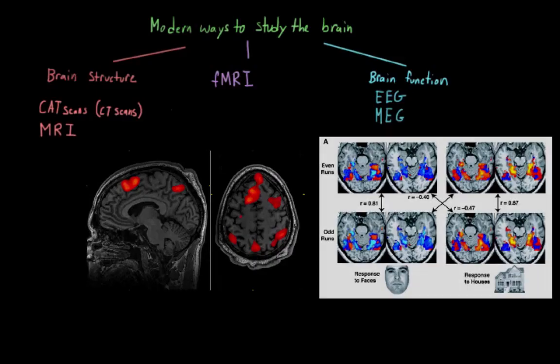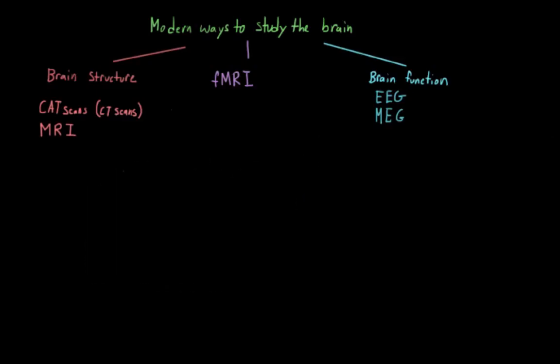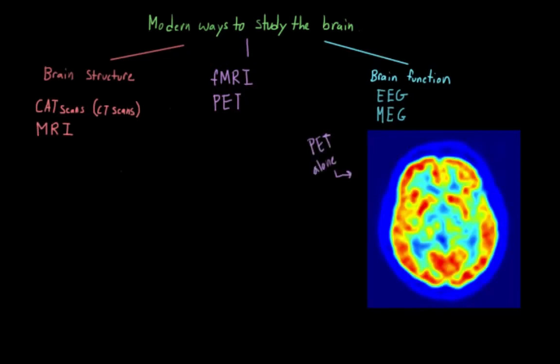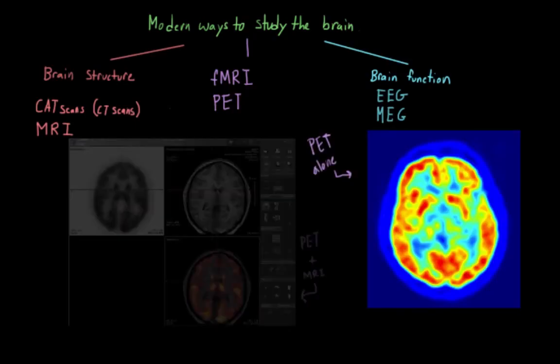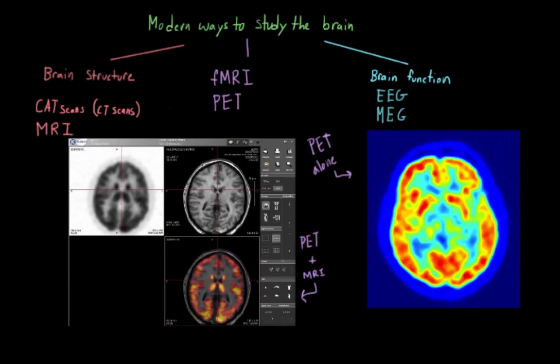The next type of methodology that is both structural and functional is positron emission tomography, or PET scans. And while on their own they can't really give us a super detailed structural image of the brain, we can actually combine them with the structural technology that we talked about earlier, like CAT scans and MRIs. And to do this technique, a kind of radioactive glucose is injected into a person. And since active cells naturally use more glucose, because they're using up the most energy and need to replenish it, we can directly see what areas of the brain are more active at a given point in time.